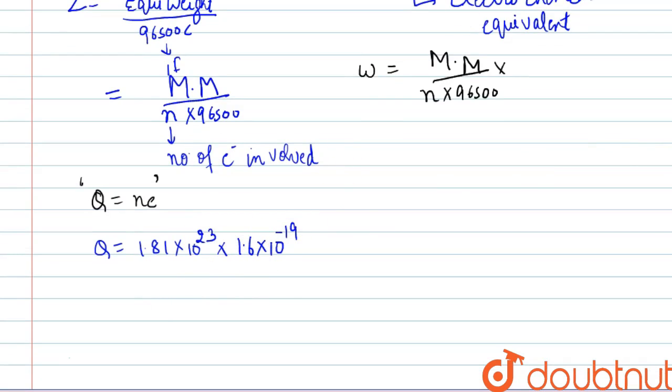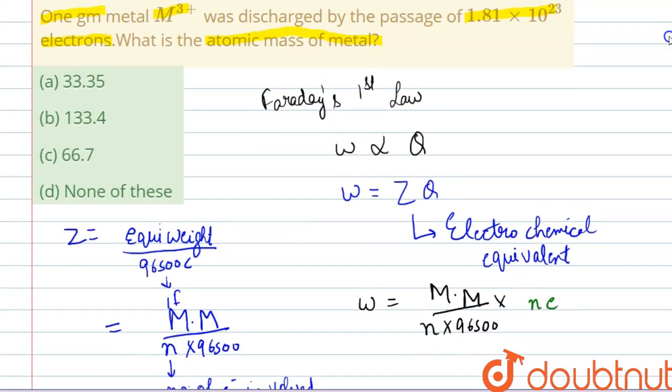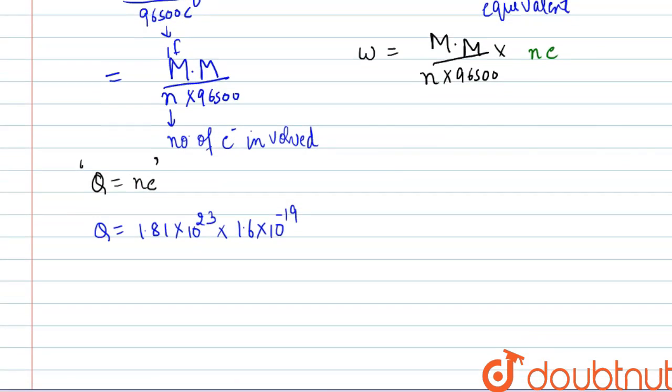We will put down the values. It will be ne. We are given that 1 gram of metal M³⁺. We are given the weight is 1 gram and we have to find the molar mass. Now also we are given the metal is of M³⁺ type, and so the n factor of this metal will be 3.